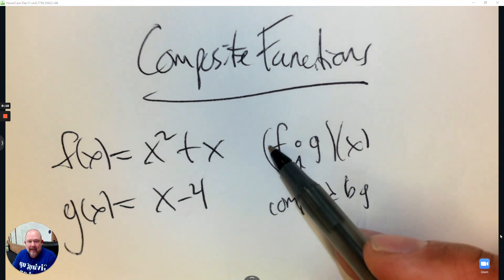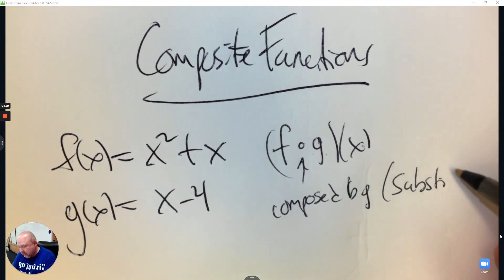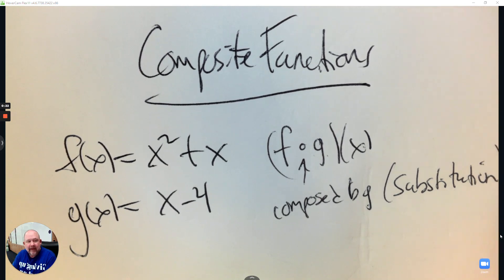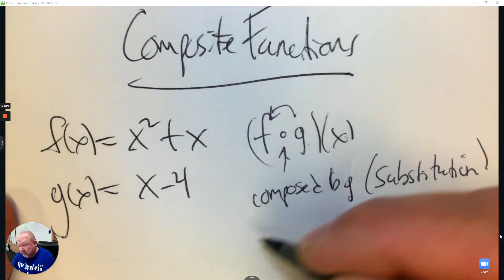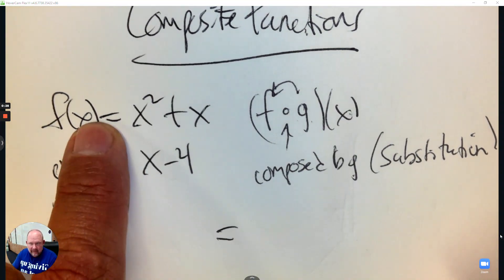And so you'd read it by f composed by g at x. This is a substitution question where you take one equation and you substitute into the other. So in this case g would be substituted into f. So do you have the ability to take g and plug it into f?